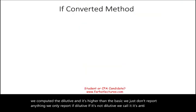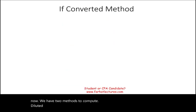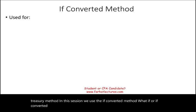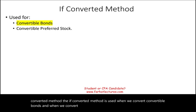Now we have two methods to compute diluted earnings per share. We have the what-if method and we have the treasury method. In this session, we use the if-converted method — also called the what-if or if-converted method. The if-converted method is used when we convert convertible bonds and when we convert convertible preferred stock.